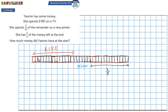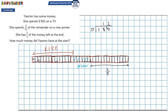So looking at what we've got, that's 15 equal size portions in the 180-pound section. This means I can calculate the value of each equal size piece, since all of them are the same. 180 divided by 15 gives me 12. So I now know that each of these little blocks has a value of 12.